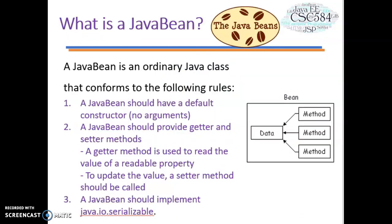A Java Bean is a portable, platform-independent model written in the Java programming language. Its components are referred to as beans. In simple terms, Java Beans are classes which encapsulate several objects into a single object. It helps in accessing this object from multiple places. A Java Bean contains several elements like constructors, getter or setter methods, and much more.